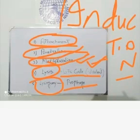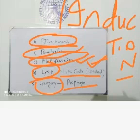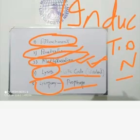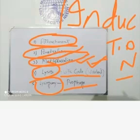آج کے life cycle میں یہ تمام چیزیں تھیں: سب سے پہلے attachment، پھر penetration، پھر host کی biosynthetic machinery کو استعمال کر کے multiplication، اور جب تعداد بہت زیادہ بڑھ جائے تو lysis — virus host cell کو پھاڑ کے باہر آ جاتا ہے۔